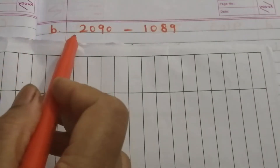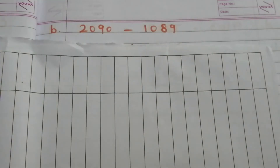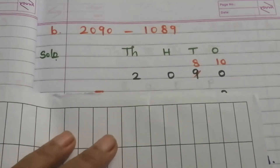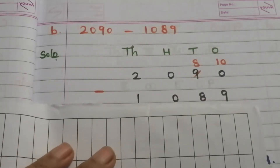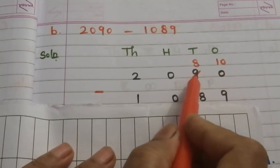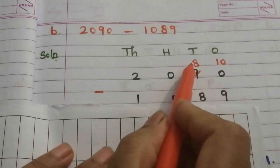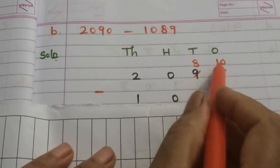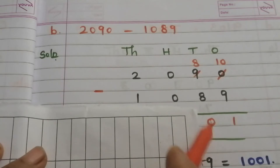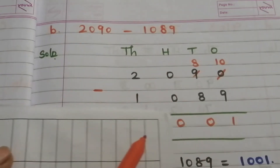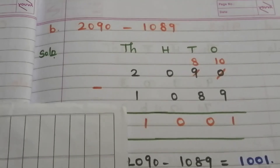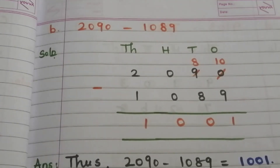Part B: 2090 minus 1089. Write these two numbers vertically, then subtract. We can't subtract 9 from 0, so borrow from the tens place — 9 becomes 8 and this 0 becomes 10. 10 minus 9 is 1, 8 minus 8 is 0, 0 minus 0 is 0, 2 minus 1 is 1. So the answer is 1001.